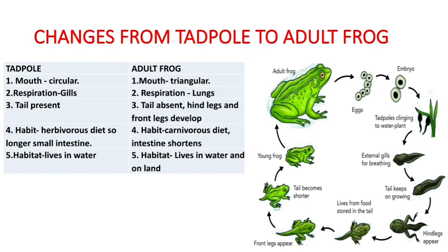Changes from tadpole to adult frog: frog has external fertilization and external development. Male and female frogs go into the water — the male releases sperm, the female releases eggs at the same time, fertilization occurs naturally, and after fertilization an embryo and tadpole are formed. Changes include: the tadpole's mouth is circular, but the adult frog's mouth is triangular. The tadpole respires only through gills, but the adult frog respires through lungs. In the tadpole, a tail is present, but in the adult frog the tail is absent.